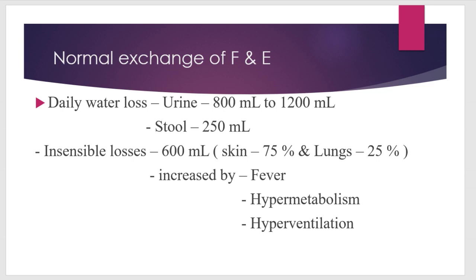These insensible losses may increase — become more than 600 ml — whenever a patient is running a fever, is in a hypermetabolic state, or is hyperventilating. Fever, hypermetabolism, and hyperventilation all increase insensible losses. One example of a hypermetabolic state is increased thyroid hormone levels, which can lead to a hypermetabolic activity.